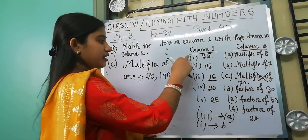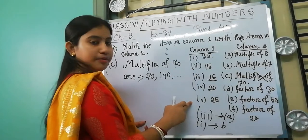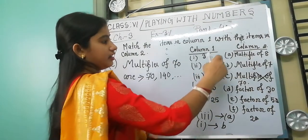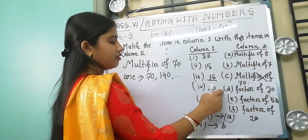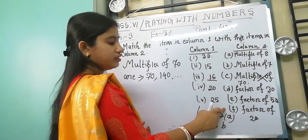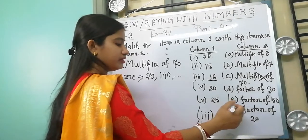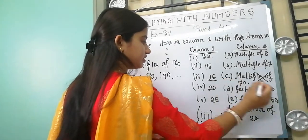Because column 1 has 5 options and column 2 has 6 options, one option from column 2 will be extra. So C — multiple of 70 — is the extra option with no match, and we cancel it.